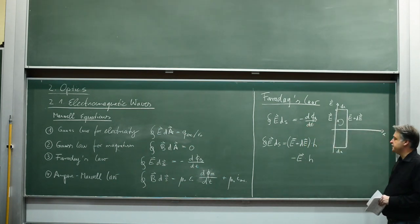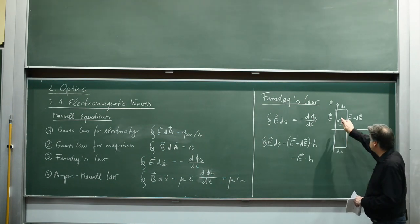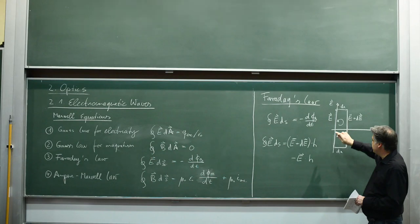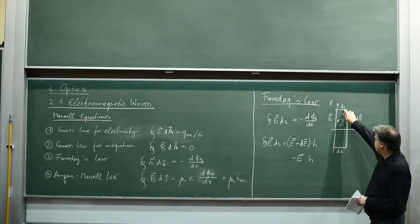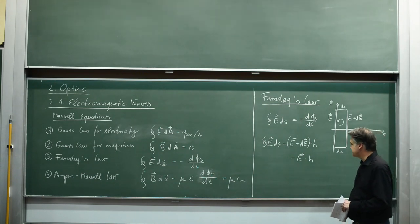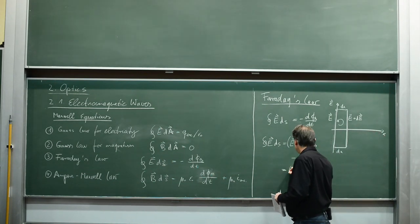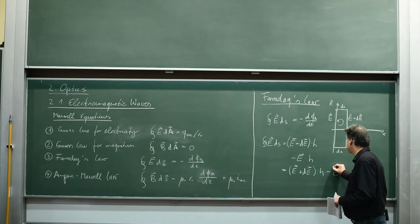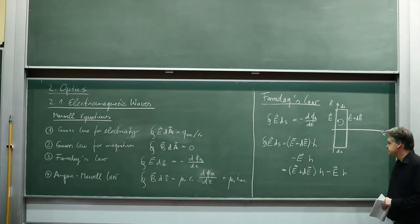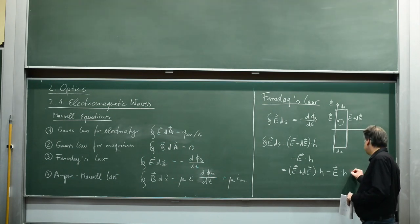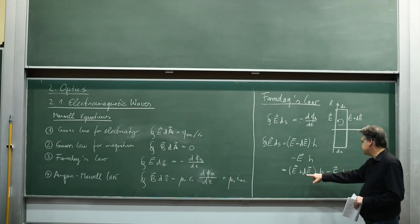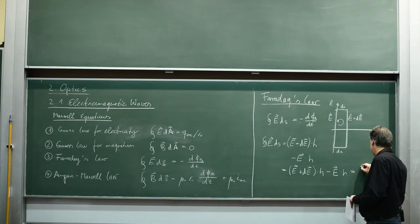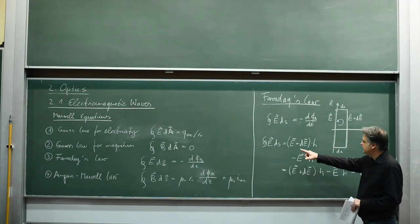These two sides cancel out because dx is identical at the top and the bottom. So we do not need to list that. E plus dE times h. The E times h part cancels out and we get in the end h times dE. This is our line integral.